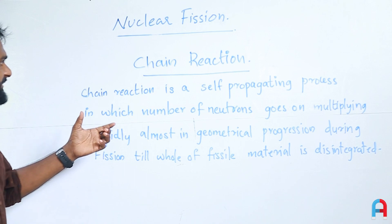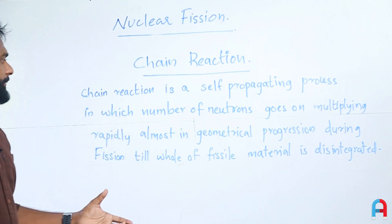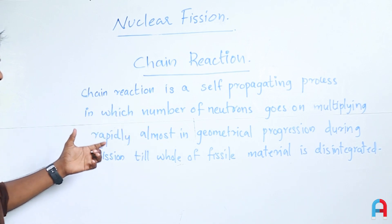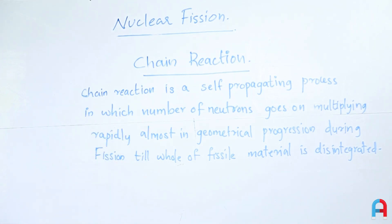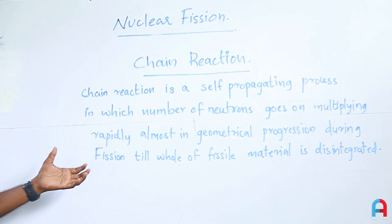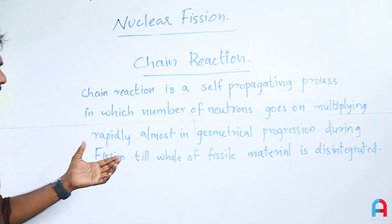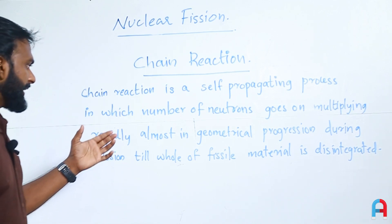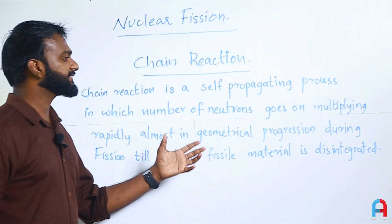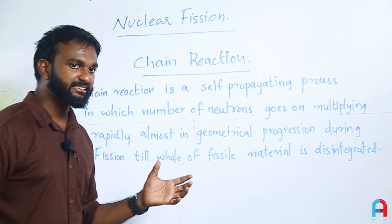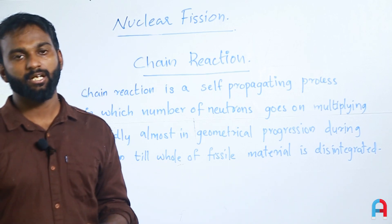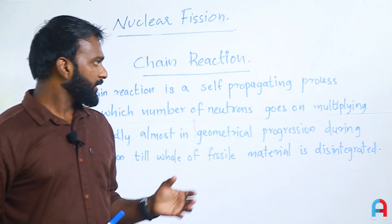Chain reaction is a self-propagating process in which the number of neutrons goes on multiplying rapidly, almost in geometrical progression, during fission till the whole of the fissile matter is disintegrated.